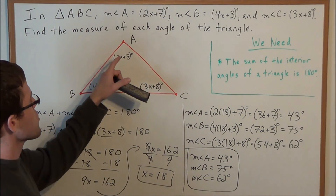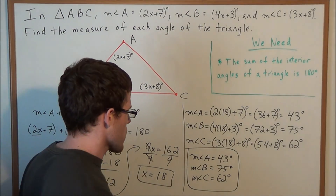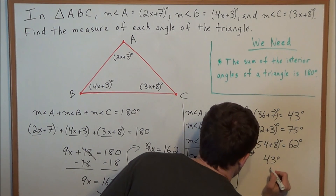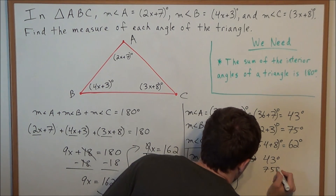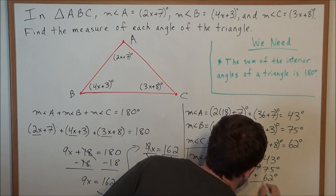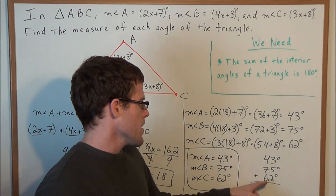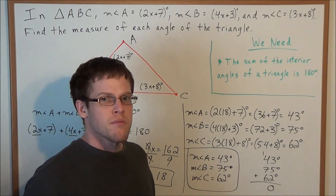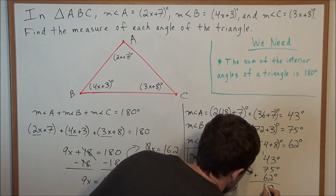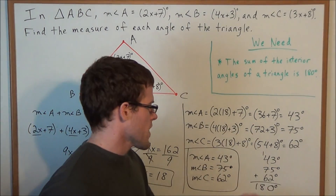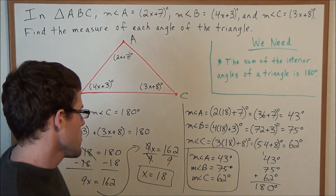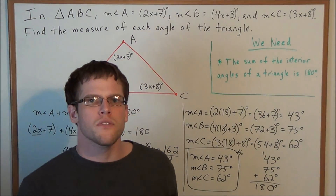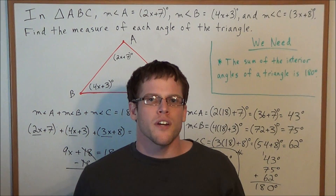So the measure of each angle of the triangle is: angle A equals 43 degrees, angle B equals 75 degrees, and angle C equals 62 degrees. As one final check, let's add these three angles together: 43 plus 75 plus 62 degrees. Adding them up: 3 plus 5 plus 2 is 10, carry the 1; then 1 plus 4 plus 7 plus 6 is 18 — giving us 180 degrees. This confirms our answer is correct. That concludes this angle sum problem. Thank you all for watching, and I hope this video was helpful.